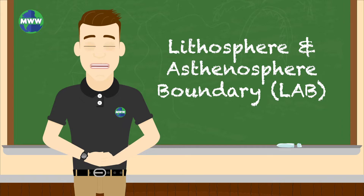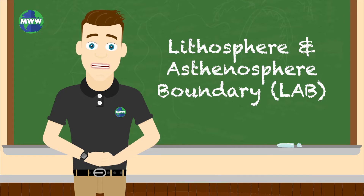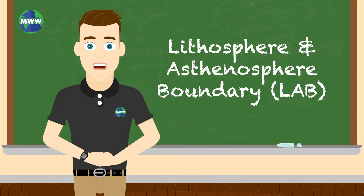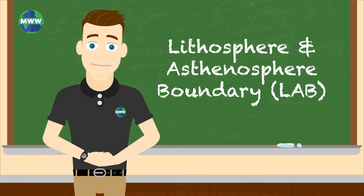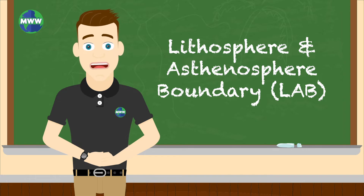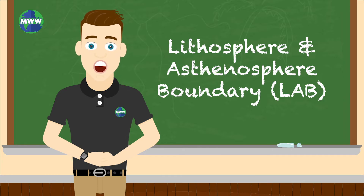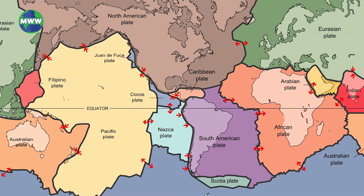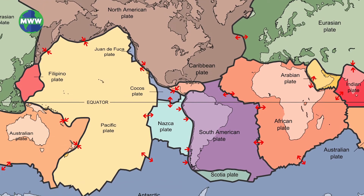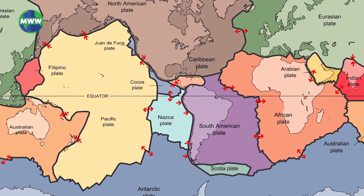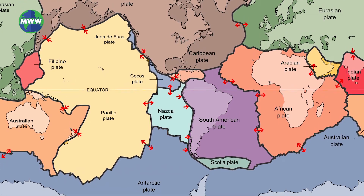The lithosphere-asthenosphere boundary, or LAB, is the point of transition from the solid lithosphere into the more gooey asthenosphere. The LAB's depth changes from place to place. The lithosphere is divided into huge slabs called tectonic plates.